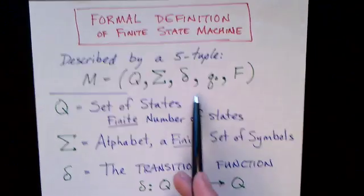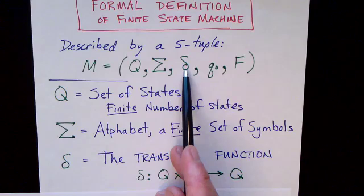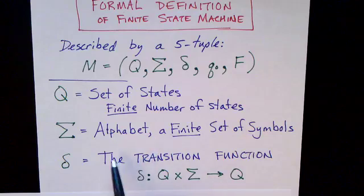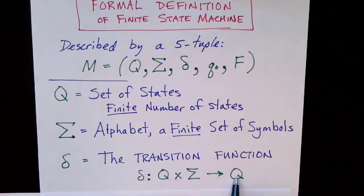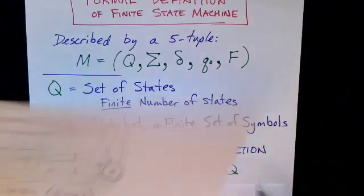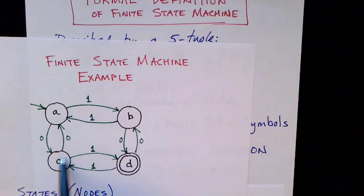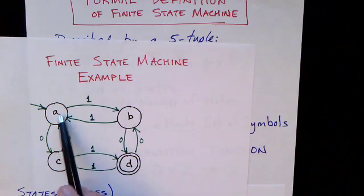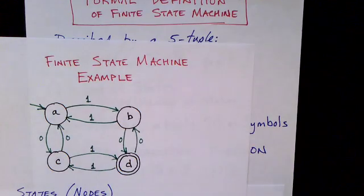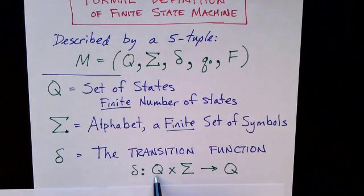Then we need the edges, and this is given by the transition function delta — that's the Greek letter delta. Delta is a function that takes two arguments and gives a result: given a state and a symbol, it tells you what state you would go to. For example, if we're in state C and we see a one, the transition function given state C and symbol one says go to state D. On the other hand, if we're in state C and we see a zero, we go to state A. So delta is the transition function that maps states and symbols to states.